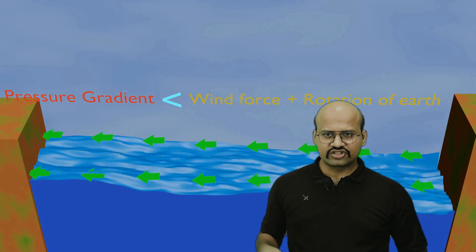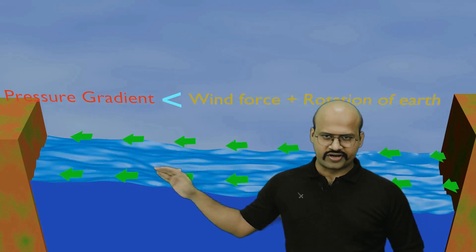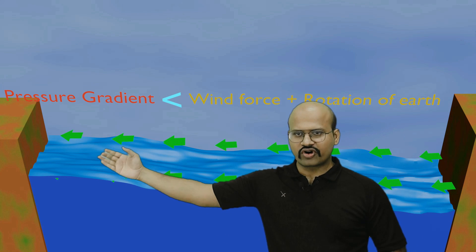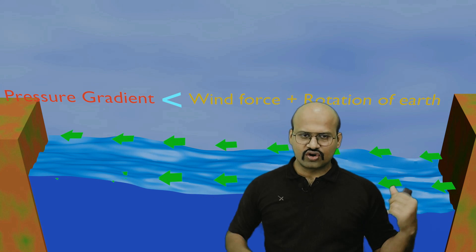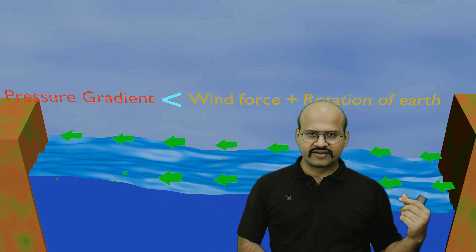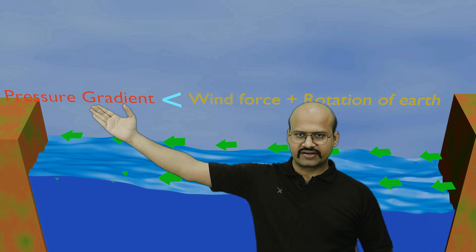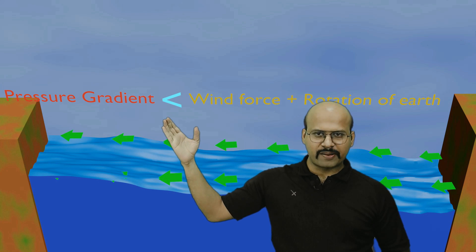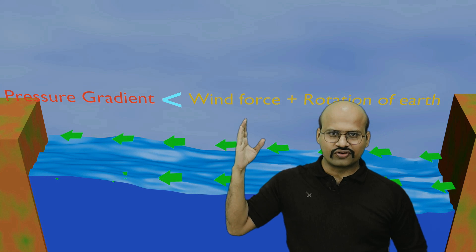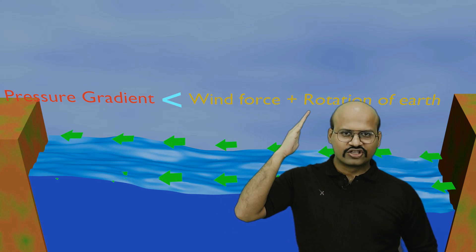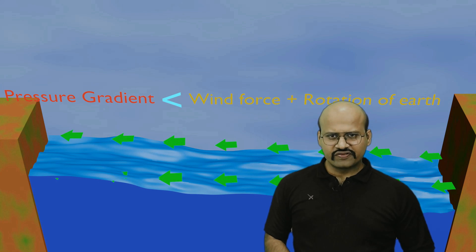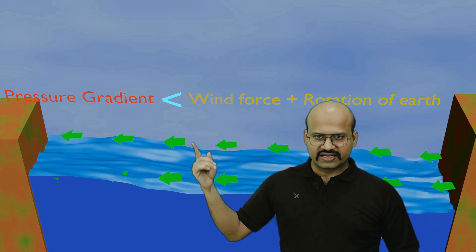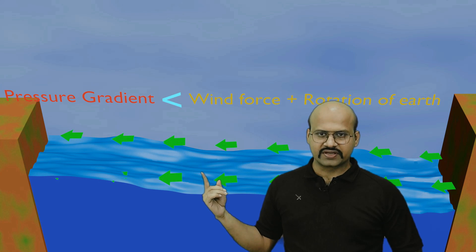Because there is a slope of water, gravity tries to pull water from a higher level towards the lower level, creating a pressure gradient. However, this pressure gradient is less than the combined effect of wind force and Earth's rotation, and therefore we see an equatorial current in both the northern and southern hemispheres.